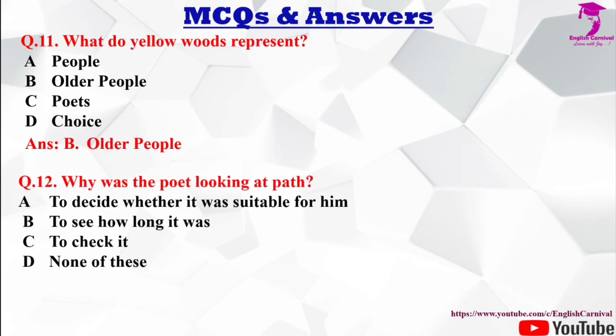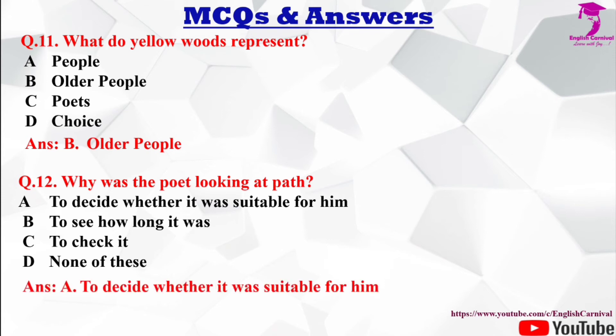Question number 12: Why was the poet looking at the path? Options: A) to decide whether it was suitable for him or not, B) to see how long it was, C) to check it, D) none of these. The correct answer is A — to decide whether it was suitable for him or not.